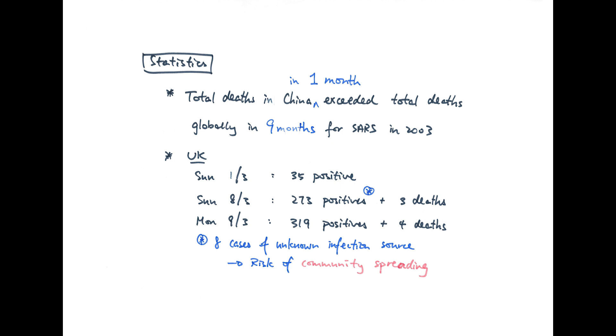This means we already have a risk of community spreading, meaning the virus is already circulating among society. You can probably expect the numbers to rise exponentially if that's the case, which is technically what's happening right now.